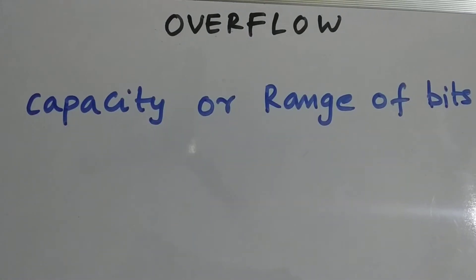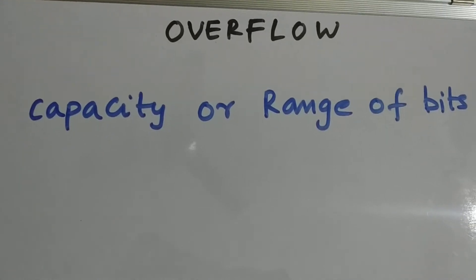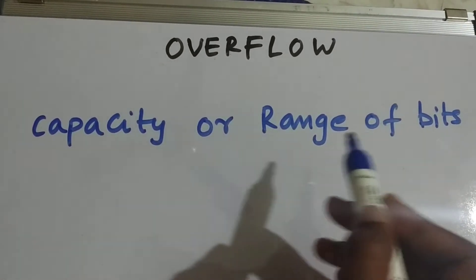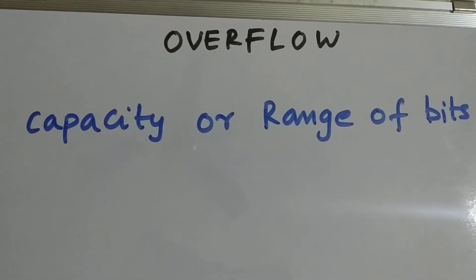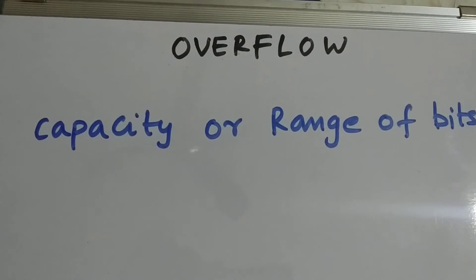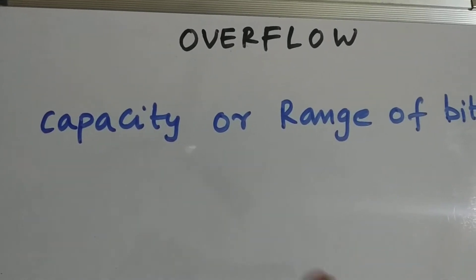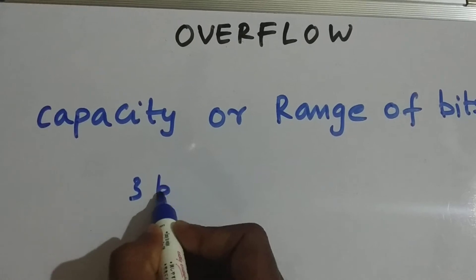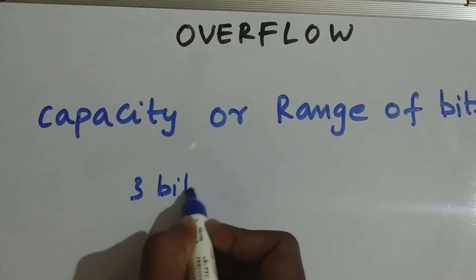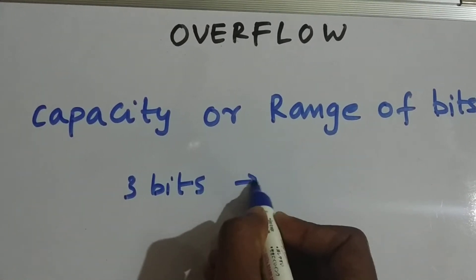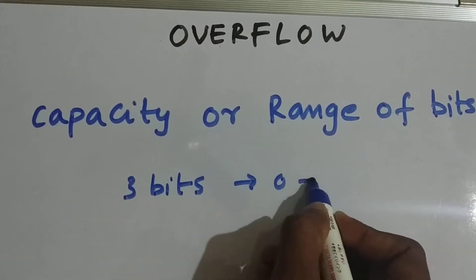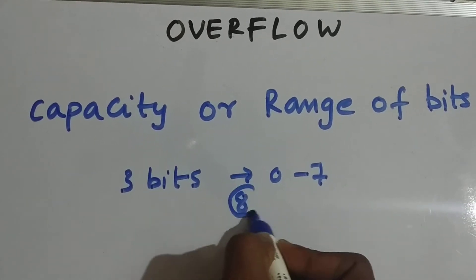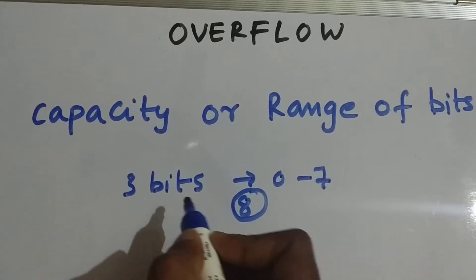One more definition: the capacity or range of bits defines the overflow. In the previous example we have three bits, so we were able to represent from zero to seven, but eight was not possible. That means eight is an overflow in a three-bit value.